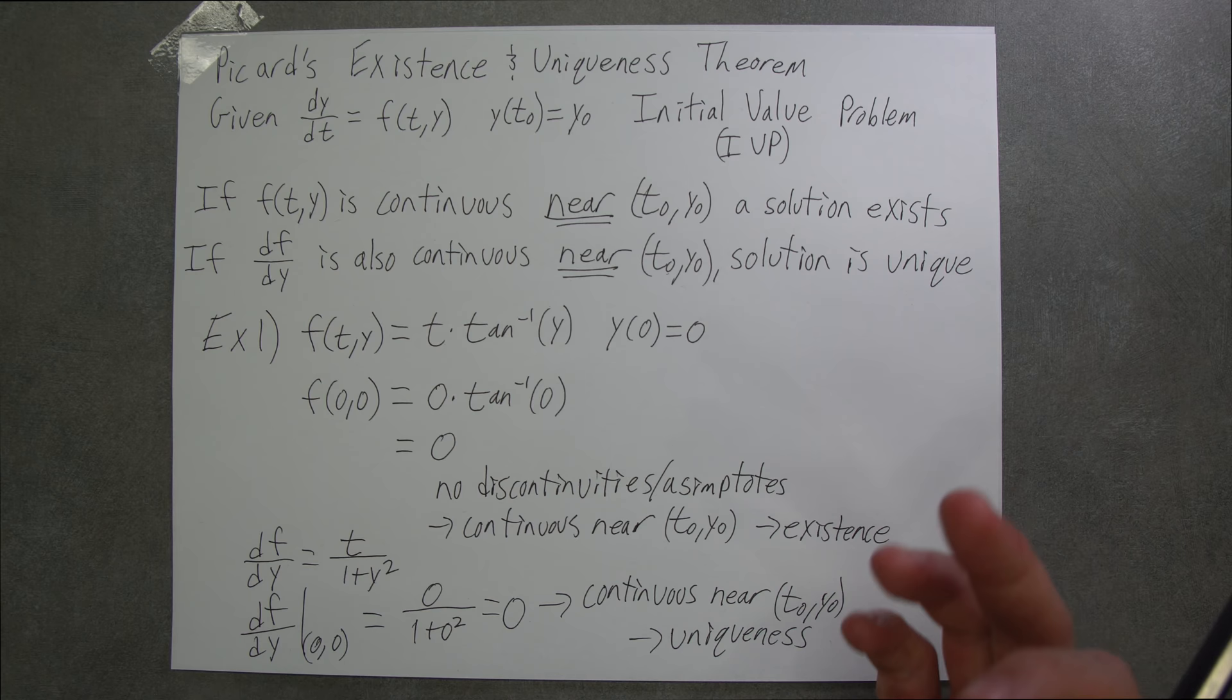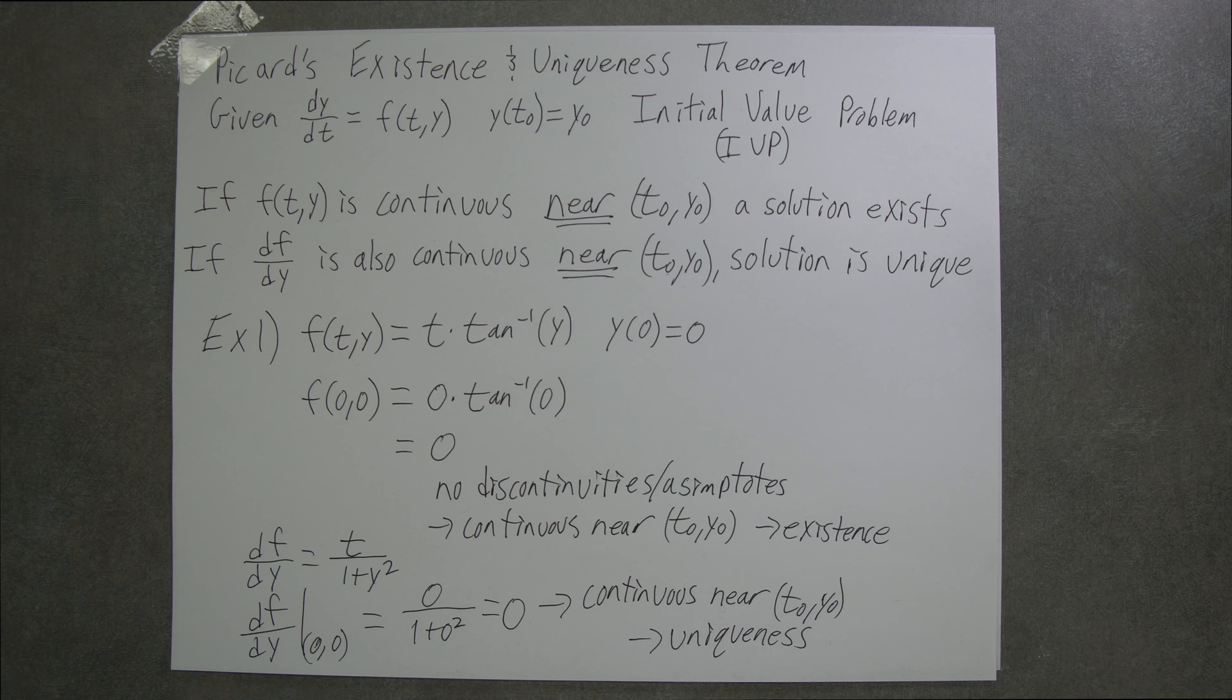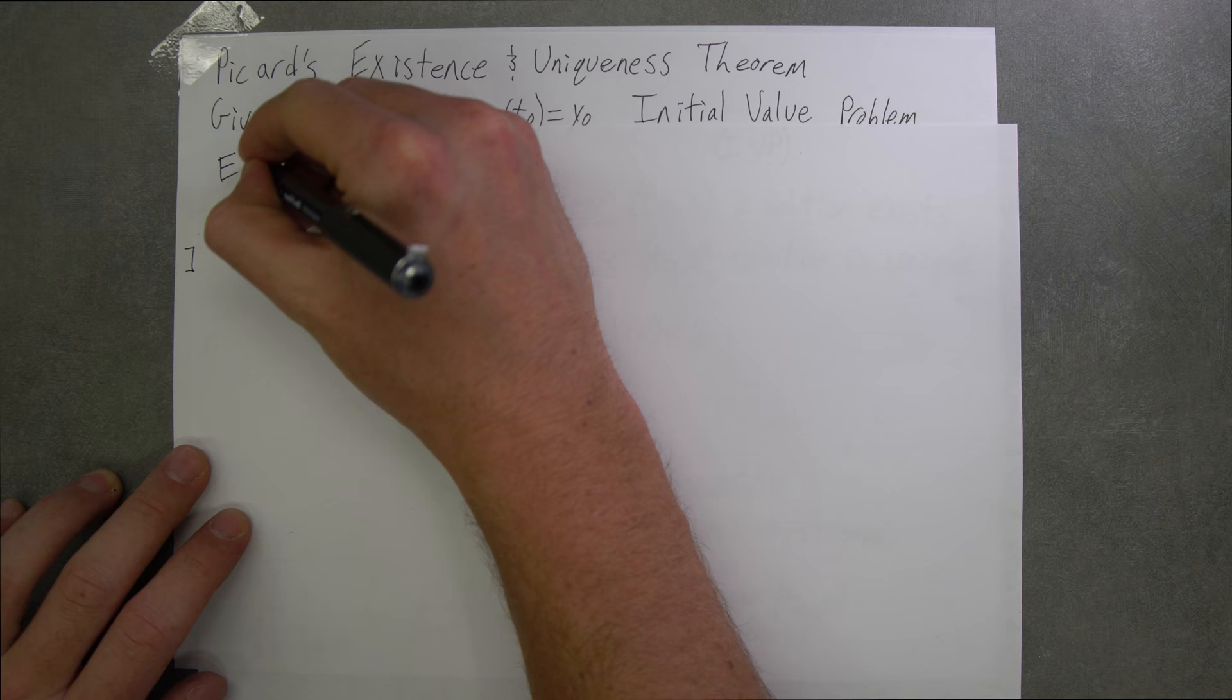Furthermore, let's do another example. And in this example, it will either not exist or it will not be unique. Let's write Example 2.